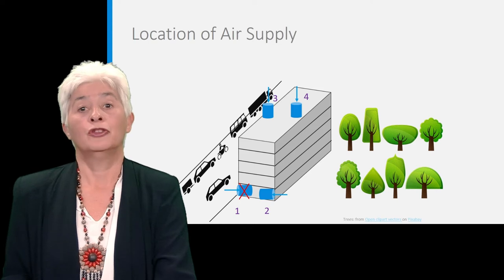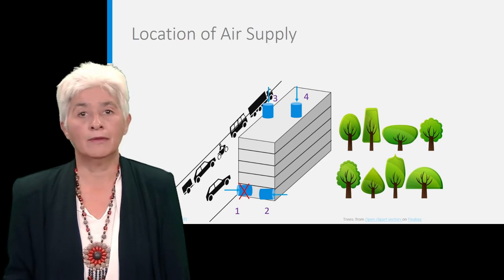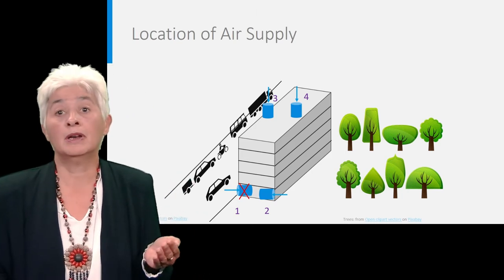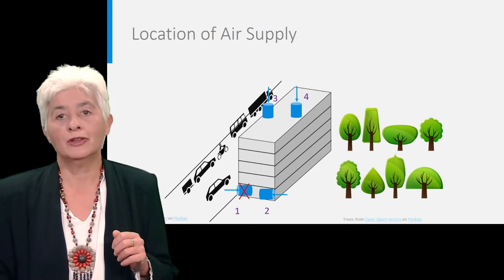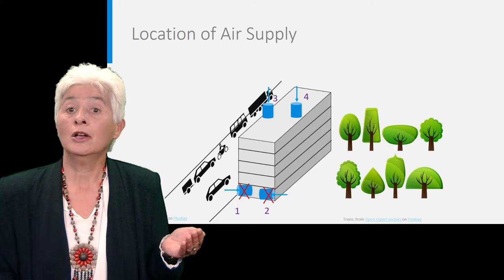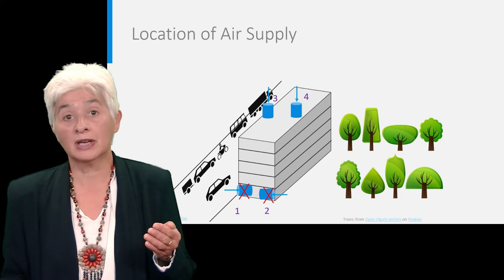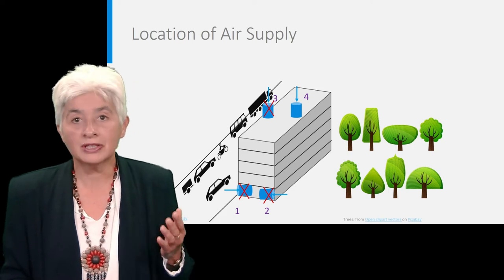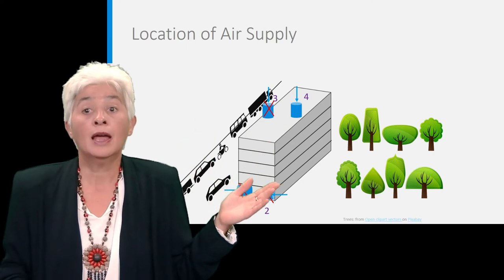Position number two is better. It is at least at the less polluted side of the building. However, an inlet at street level is never recommended as it is more prone to being damaged, clogged, or temporarily polluted, for instance if it is close to a place where people are used to smoke. The higher the air inlet, the less polluted the air will be. So it is always recommended to put it on the roof, preferably at the less polluted side. So better at place four than at place three. And of course you also need to consider the environment and account for pollution sources from other buildings, industrial sites, and the wind direction.